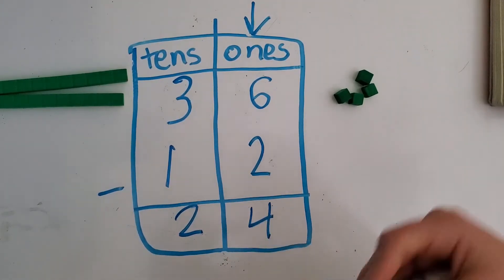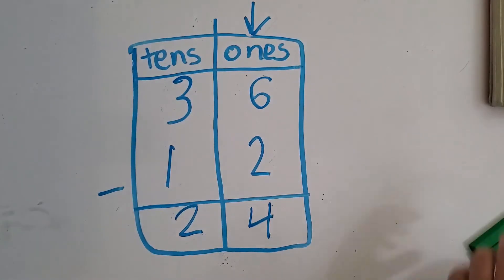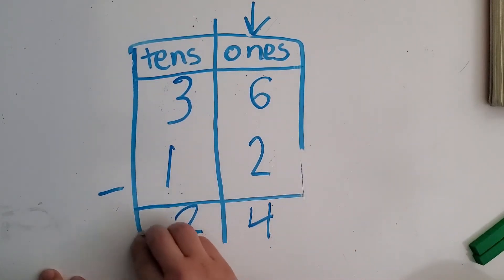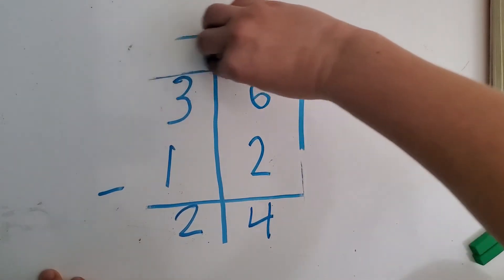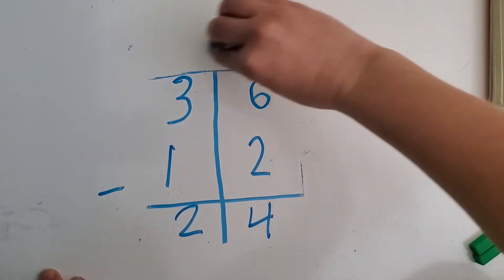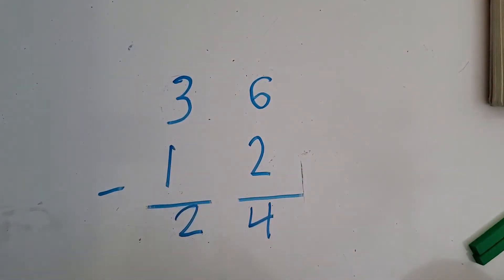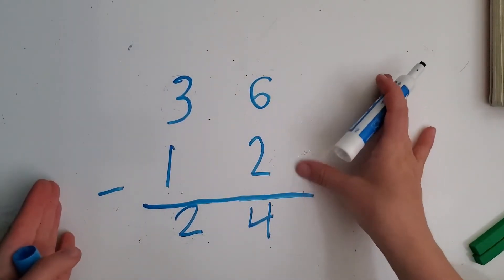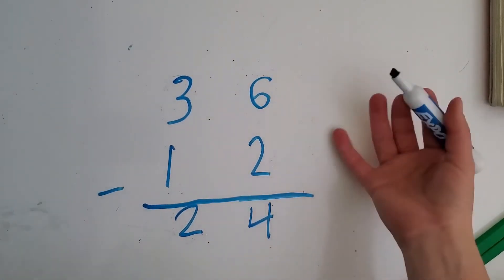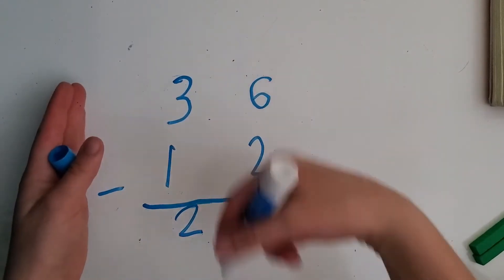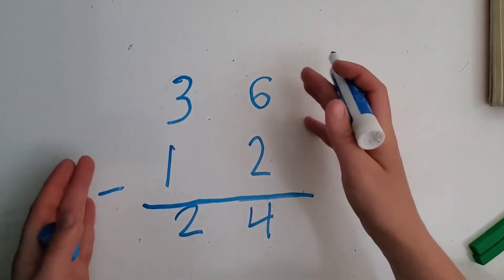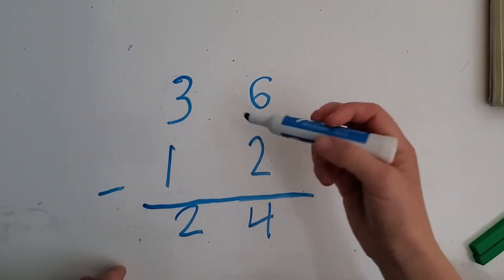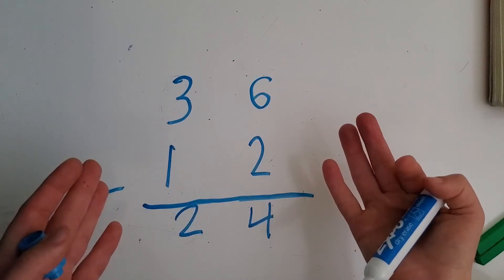Now I want to show you something. I'm going to take away these models and also our little chart. I'm going to erase the lines and just redraw our equal sign. You can find the answer without the chart, just like this — right here without the chart. It's the same thing: we still have our ones side and our tens side; we just don't have a line down the middle and it's not labeled, but we know where it is. So we can still do six minus two equals four — math you can do in your head. And then for tens: three minus one equals two.